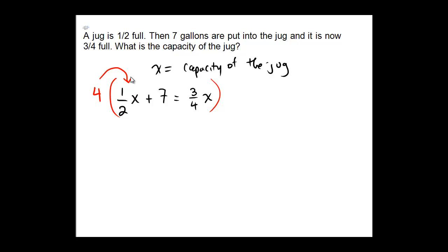Four times a half x would be two x, plus four times a seven would be a twenty-eight. And then three-fourths of four is just three, so we get three x.